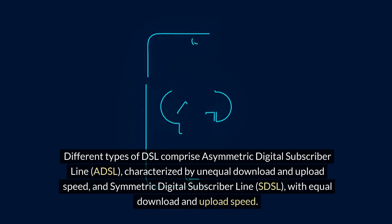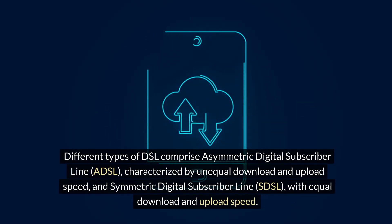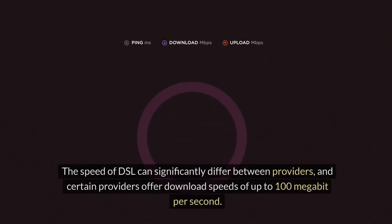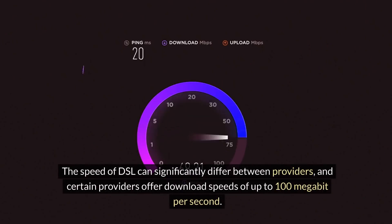Different types of DSL comprise asymmetric digital subscriber line (ADSL), characterized by unequal download and upload speed, and symmetric digital subscriber line (SDSL), with equal download and upload speed. The speed of DSL can significantly differ between providers, and certain providers offer download speeds of up to 100 megabit per second.